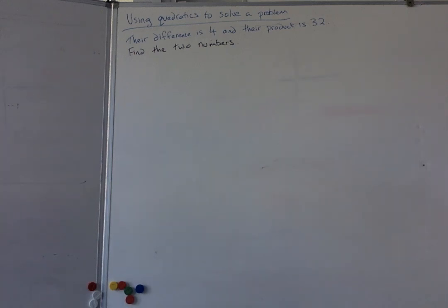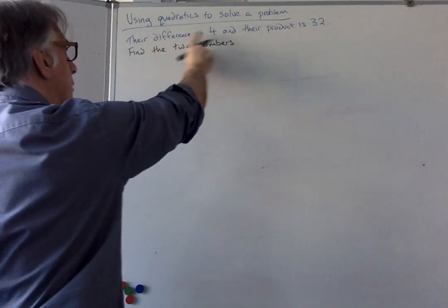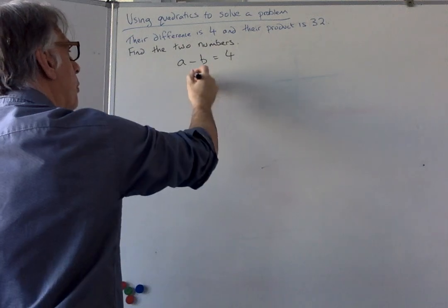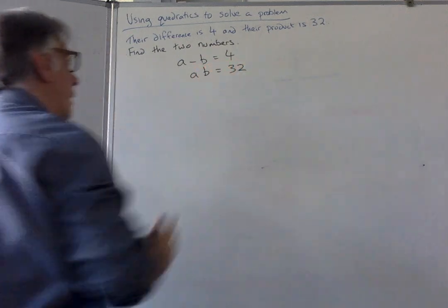So we need to find two numbers where their difference is 4 and their product is 32. I'm going to call the numbers A and B. First of all they have a difference of 4, so I know that A minus B equals 4. And they have a product of 32, so I can start off with that.